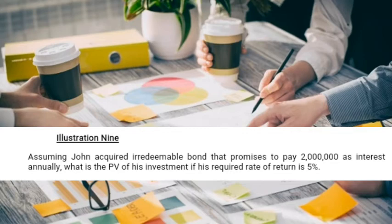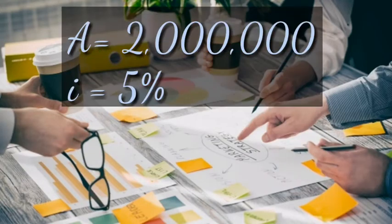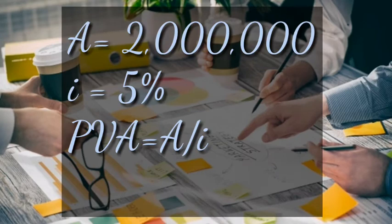We are going to determine the present value of perpetual annuity since it is an irredeemable bond. An irredeemable bond has no maturity date, and if it has no maturity date the cash flows will go on forever. So we are going to calculate the present value of perpetual annuity.